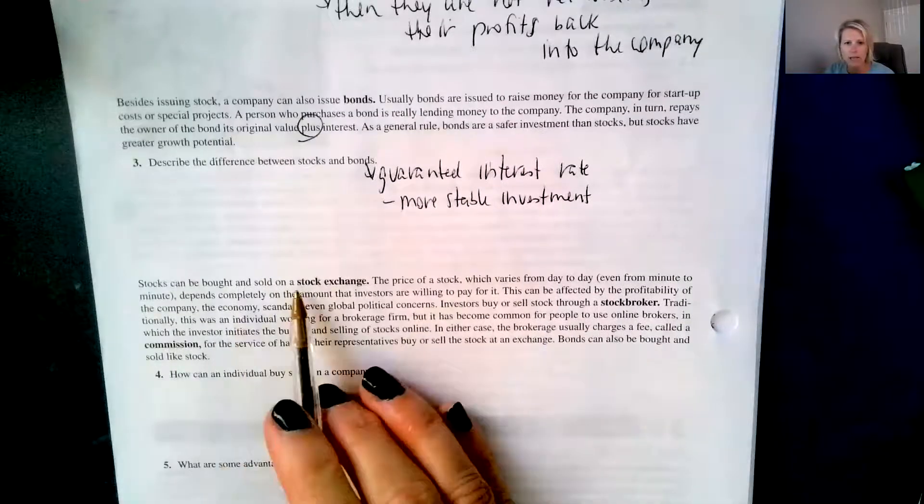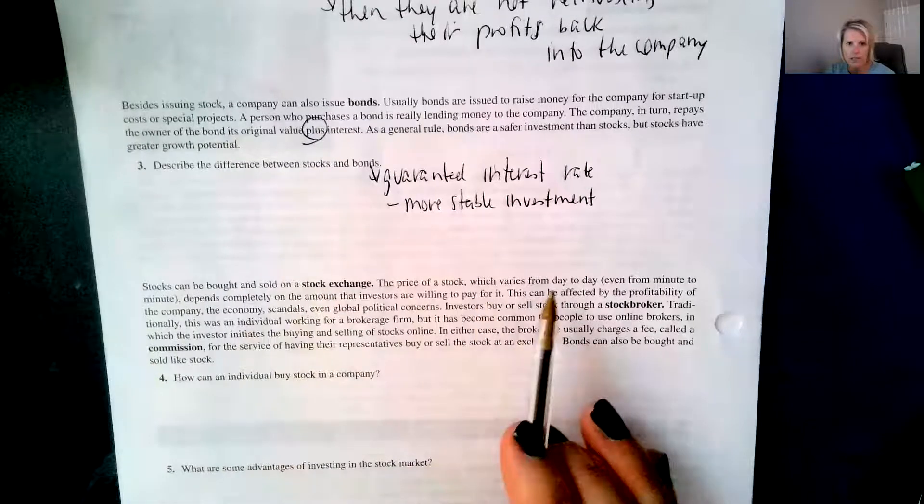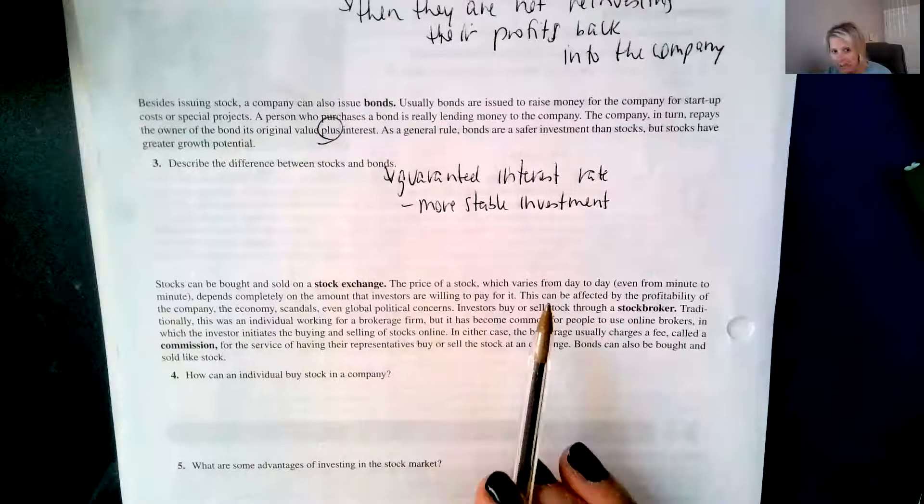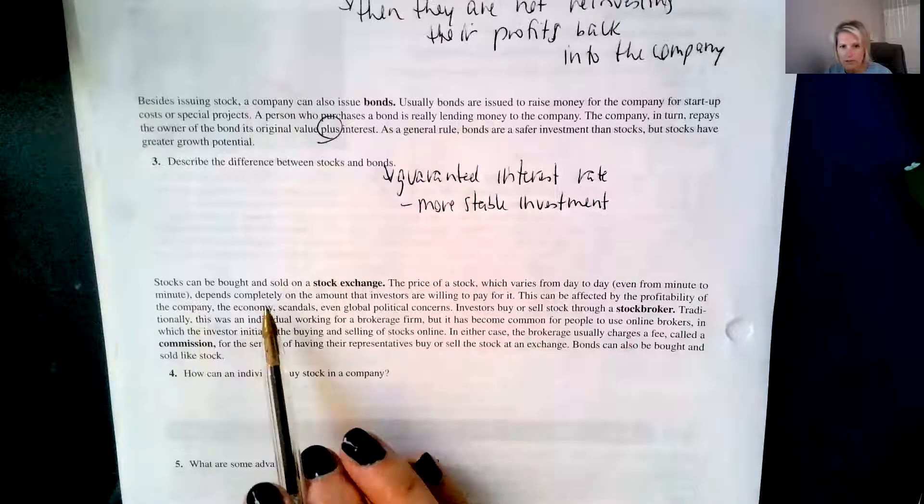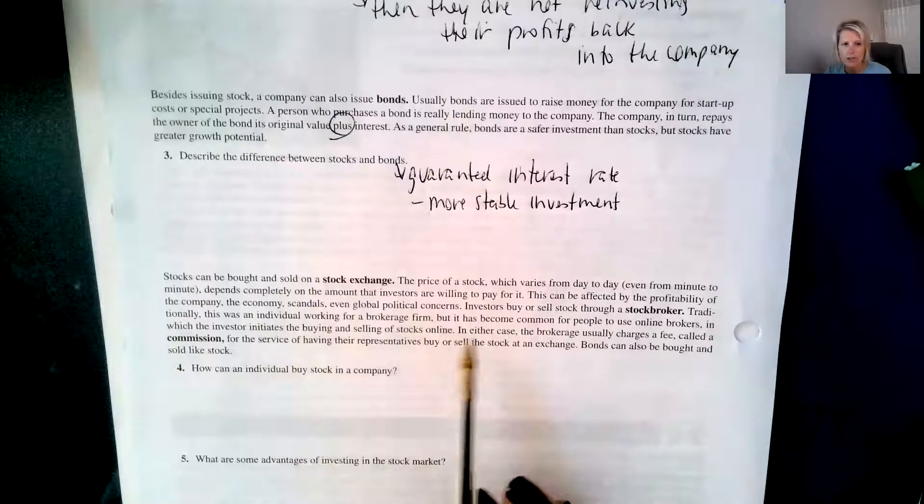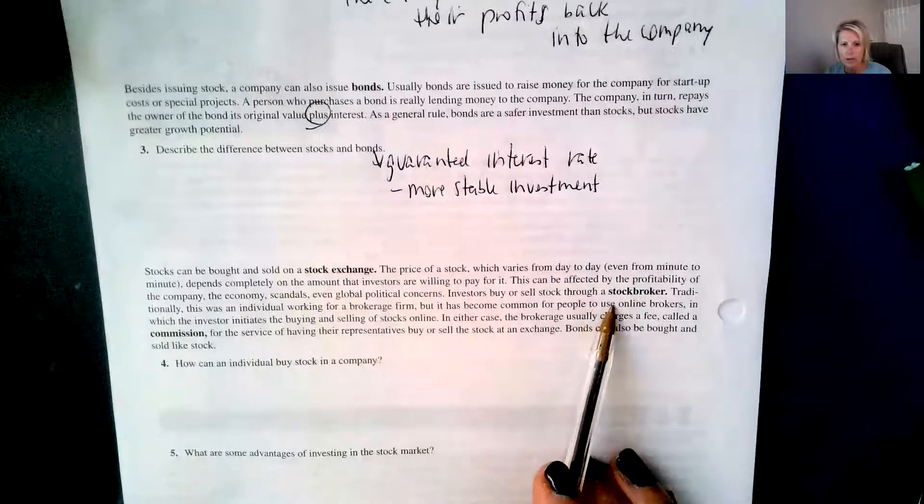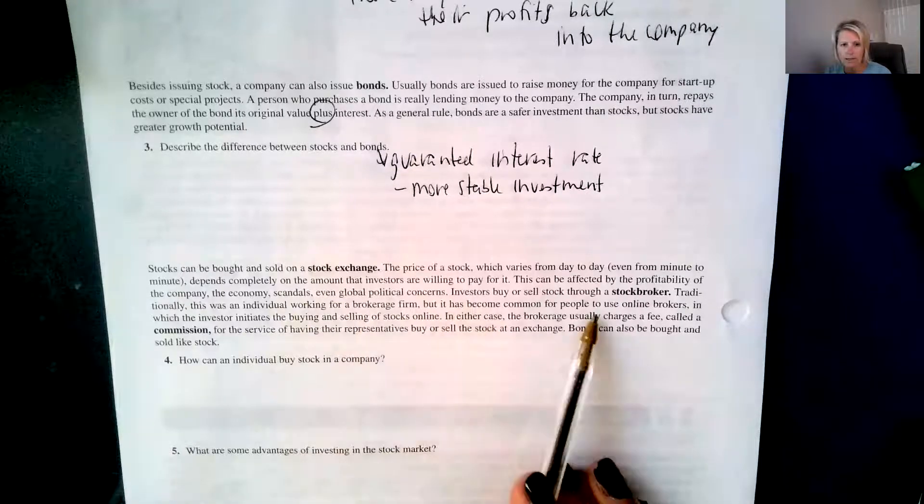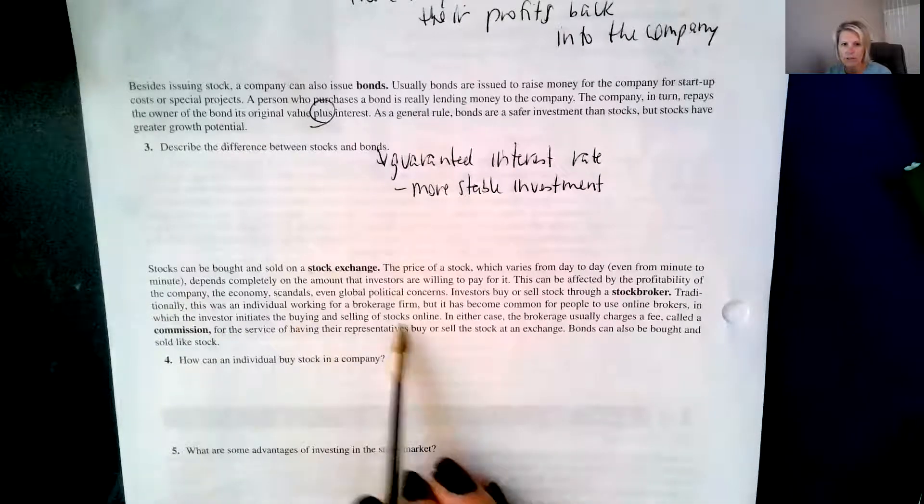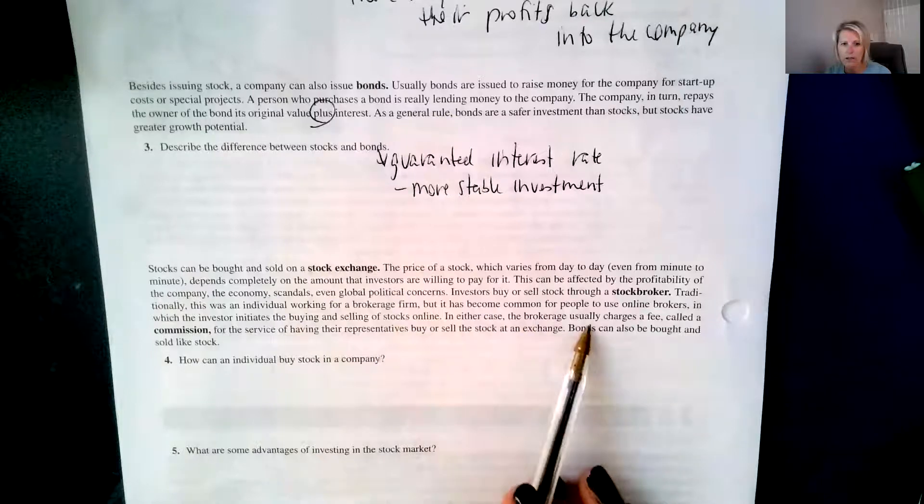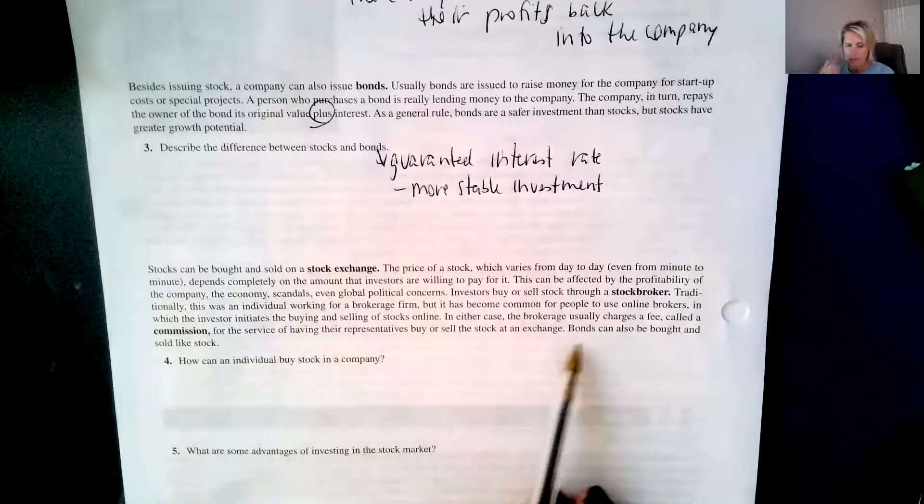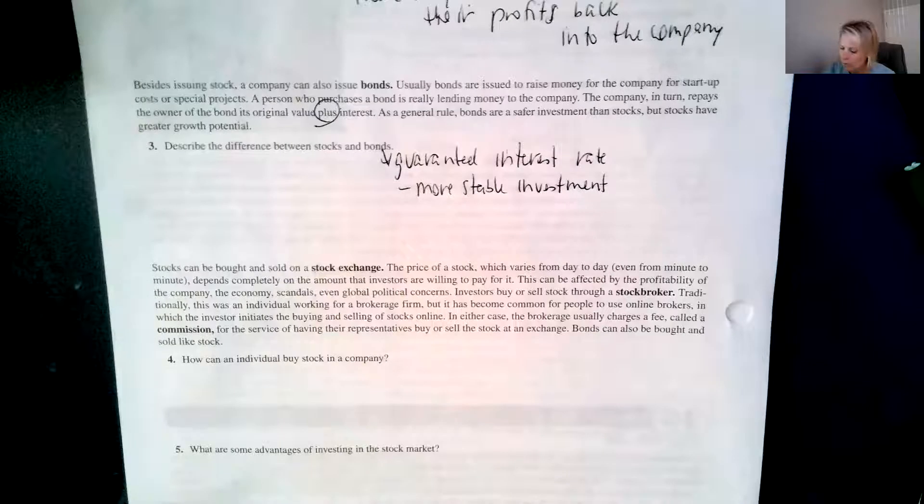So stocks can be bought and sold on a stock exchange. The price of a stock, which varies from day to day, sometimes even minute to minute, depends completely on the amount that investors are willing to pay for it. This can be affected by the profitability of the company, the economy, scandals, even global political concerns. Investors buy or sell stock through a stock broker. Traditionally, this wasn't an individual working for a brokerage firm, but it has become common for people to use online brokers. So it says, how can individuals buy stock in a company? So through a stock broker.